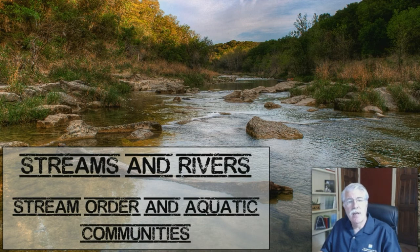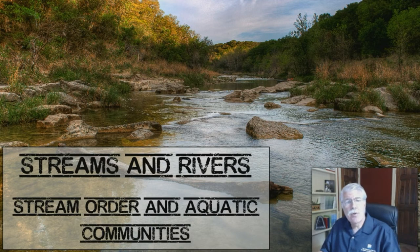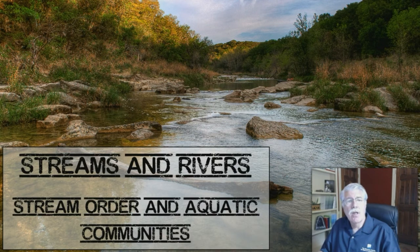From there, water flows downhill in tiny trickles. As these trickles — we also call this runoff — begin to combine, they first carve out a small stream channel by erosion. This first small stream channel is called a first order stream. This is a small stream with no tributaries coming into it.